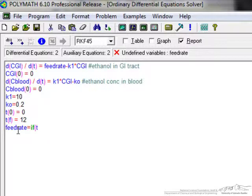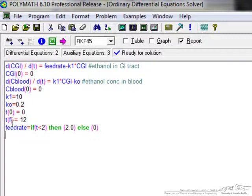Now we're going to use an if-statement: if the time is less than two hours, then feed rate equals 2.0. Else the feed rate is zero. This expression accounts for the fact that for the first two hours a person is consuming ethanol at a constant rate, and then they stop after two hours so no additional ethanol is being fed in.